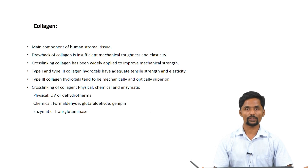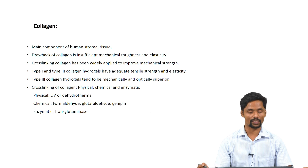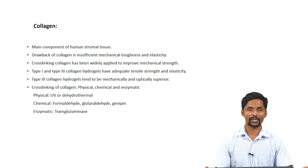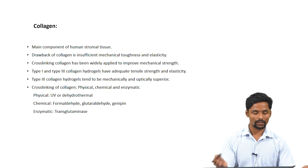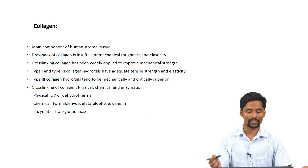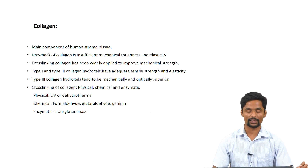Now we will talk about the various polymers used for constructing corneal tissue. The primarily used polymer is collagen. As we learned in the previous session, collagen is the most predominant polymer present in the cornea and is the main component of the stromal tissue. The drawback of collagen is insufficient mechanical toughness and elasticity required for corneal tissue.